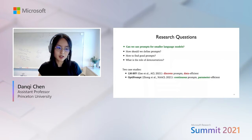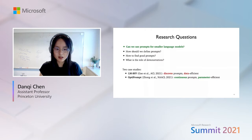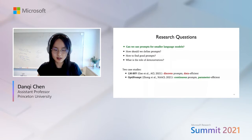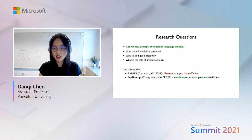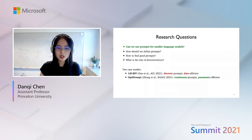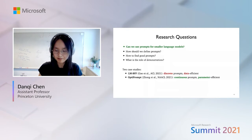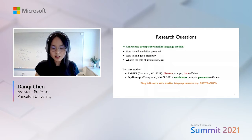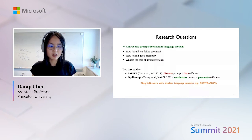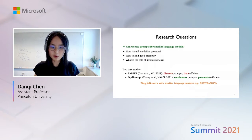The first work is called LM-BFF, which is a better discrete prompt method that works well in data-efficient or few-shot learning settings. The second work is called OptiPrompt, which takes a different paradigm with continuous prompts and can be viewed as a parameter-efficient alternative. Importantly, both methods work well with smaller language models such as BERT or RoBERTa.